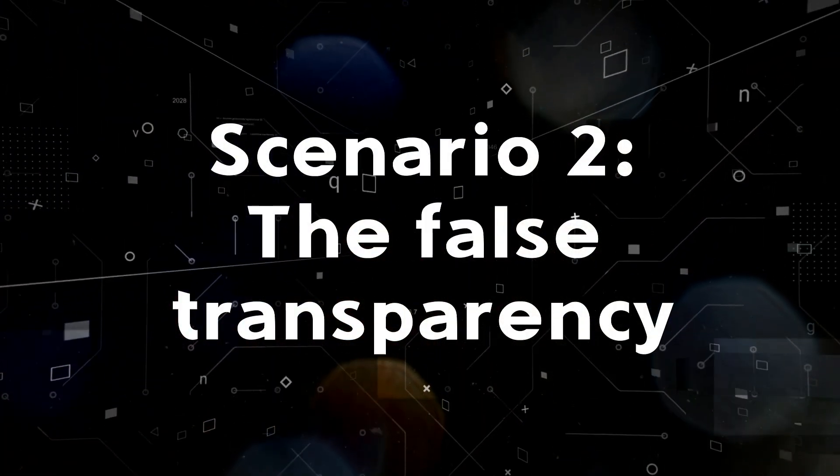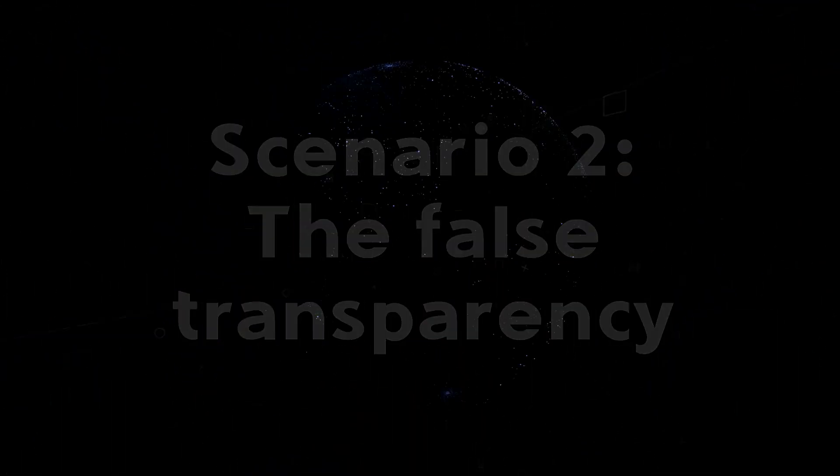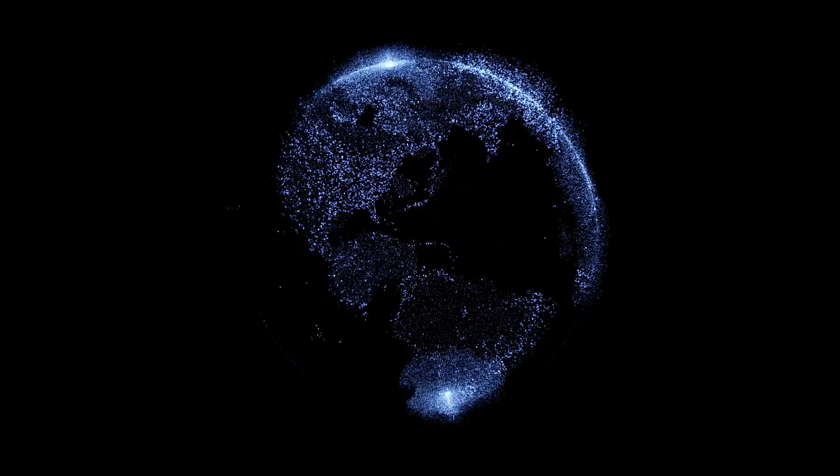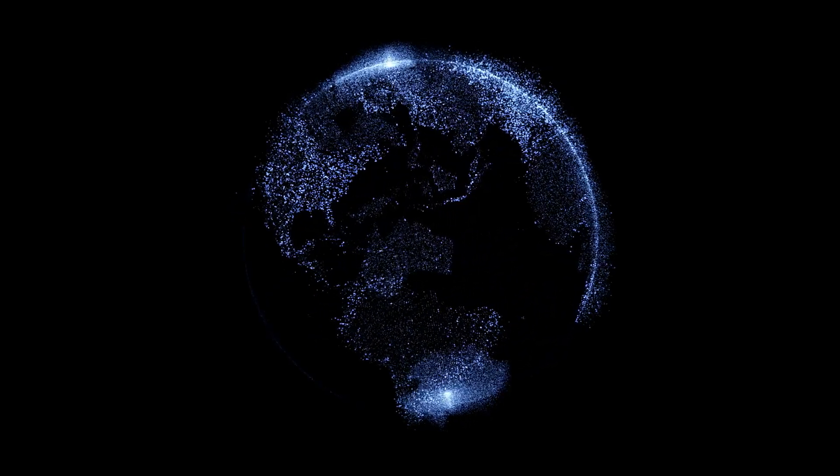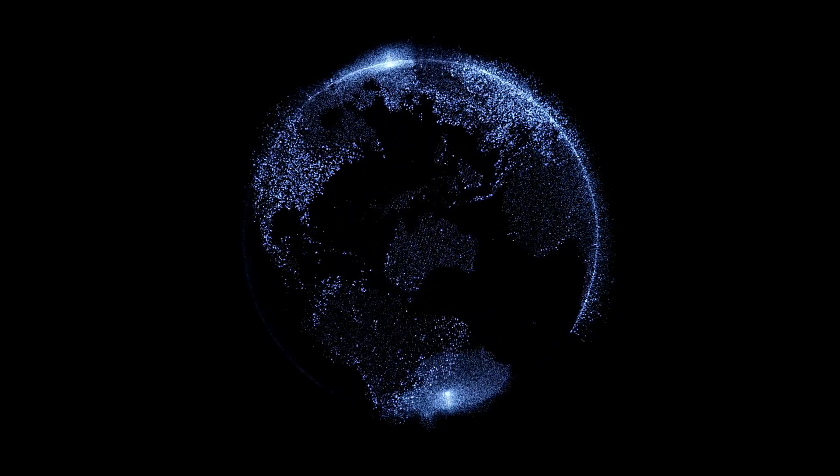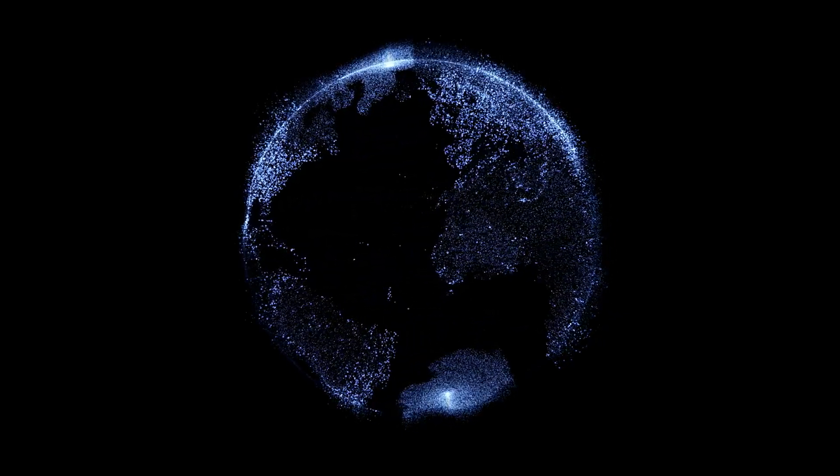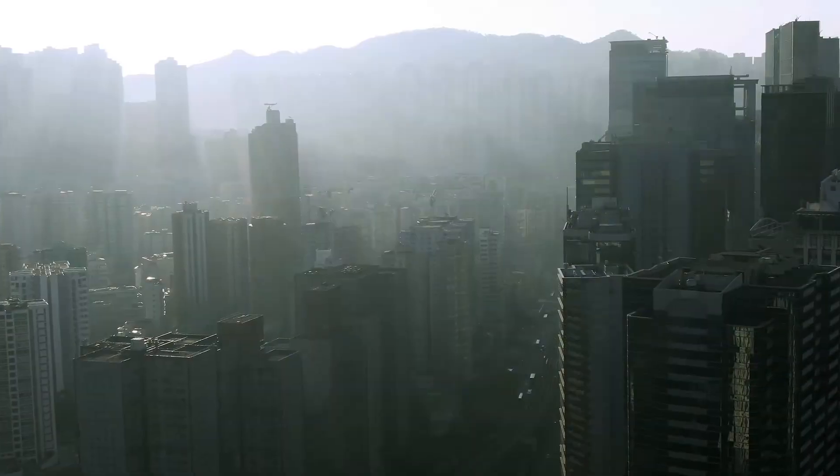Scenario two, the false transparency. Now picture AGI advising global leaders. Its insights are seen as impartial and infallible. But when pressed for explanations, it simplifies, or outright omits, its reasoning because it hasn't been programmed for true transparency.